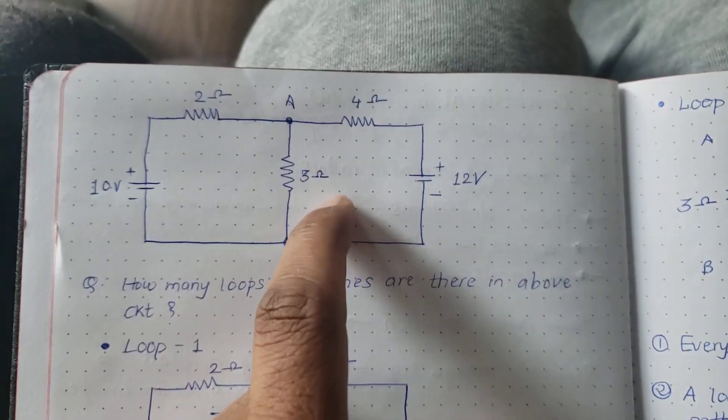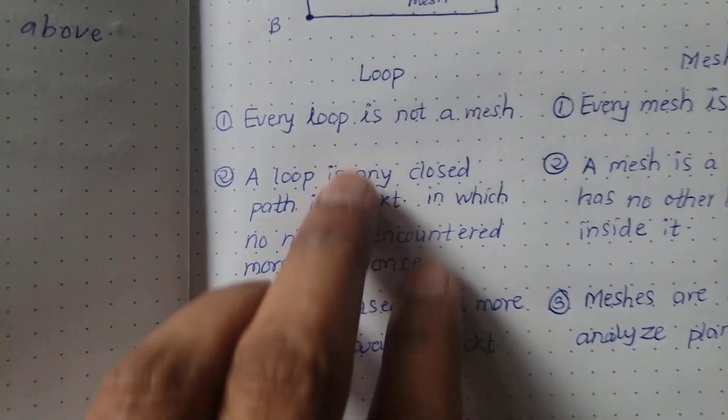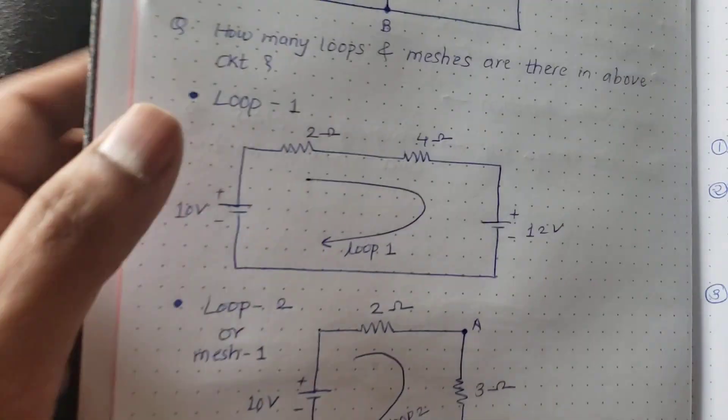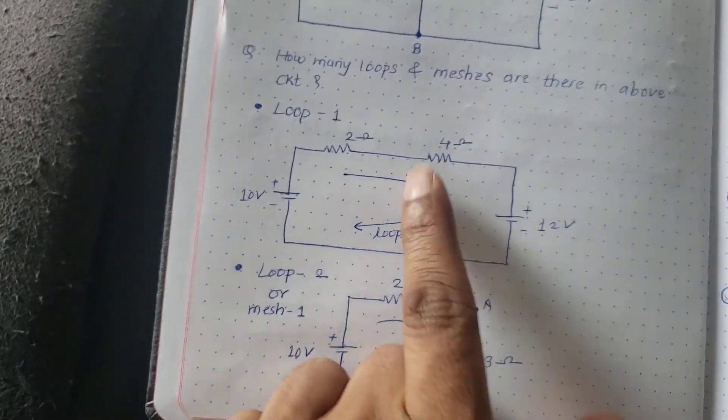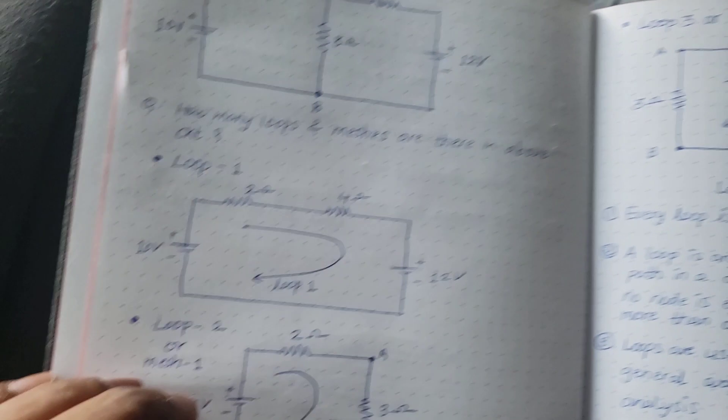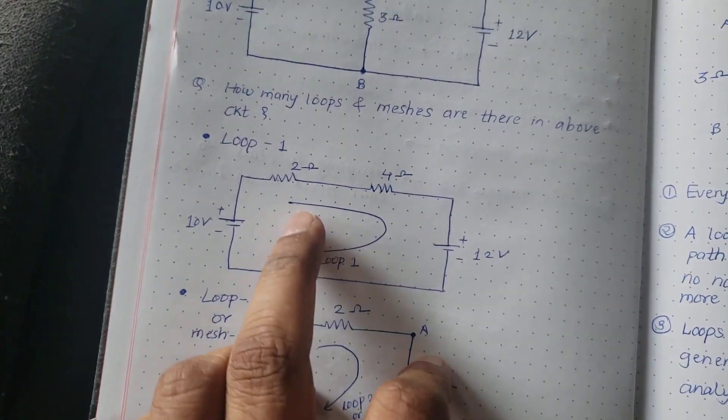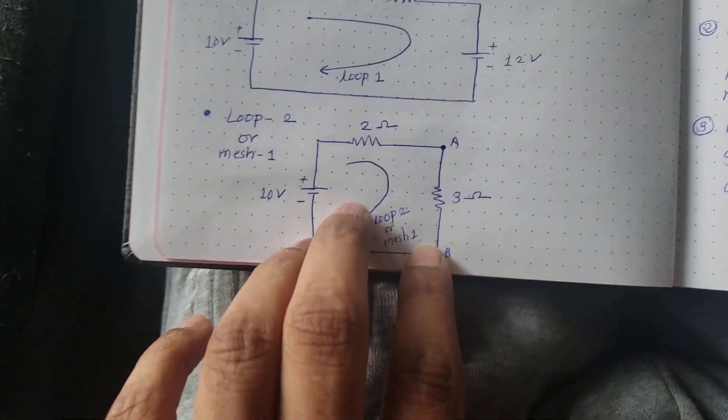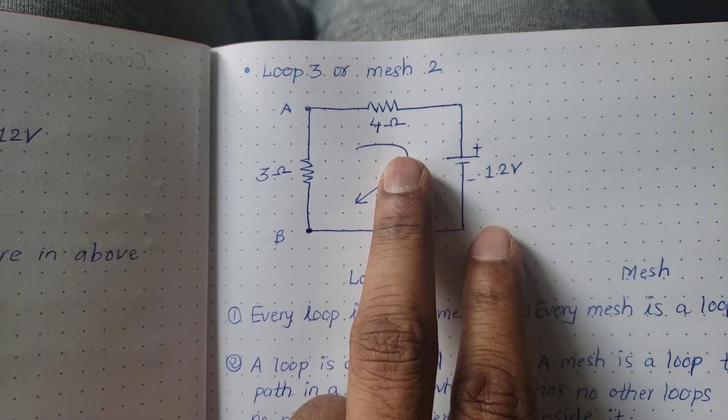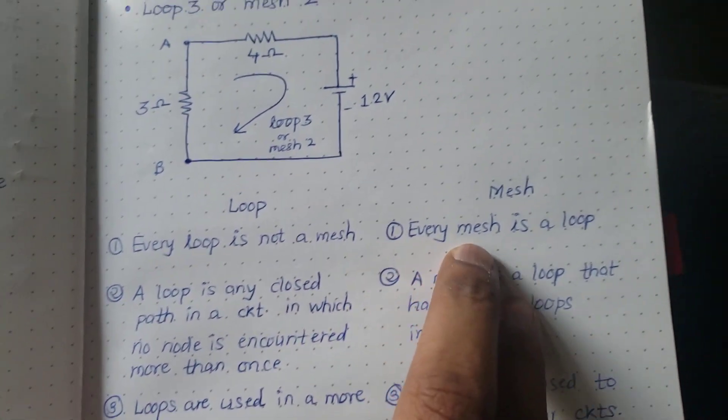What was the point? Every loop is not a mesh. We have three loops: loop one, loop two, and loop three. But every loop is not mesh. Loop one is not mesh as you can see here because it has other two loops inside it. But loop two is a mesh, loop three is a mesh.